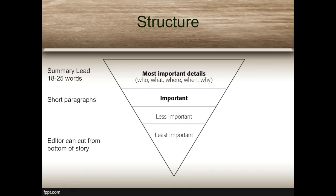So to wrap up, let's review once again the structure of the inverted pyramid story. It begins with a summary lead summarizing the key details — roughly 18 to 25 words — and only the key details, not everything. Don't try to cram all the facts into the lead. Sum everything up with just the crucial details. Then in short paragraphs, you give the facts in descending order of importance — more important to less important. This allows the editor to cut from the bottom if needed, and makes it easier for the reader to understand the story and get the key facts they need.